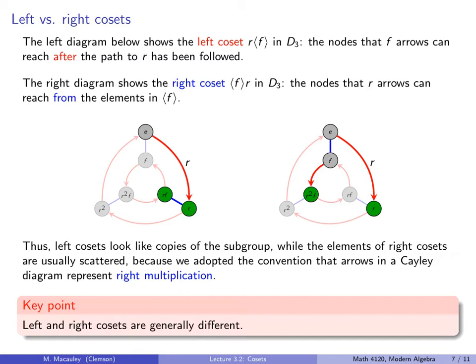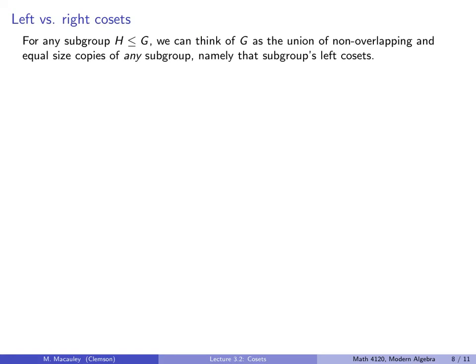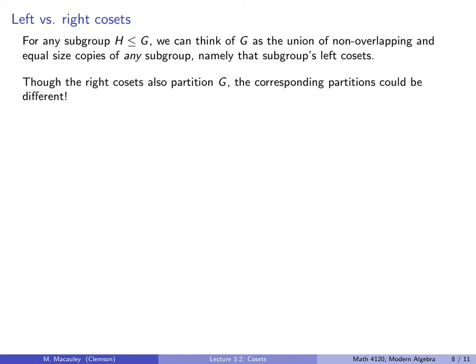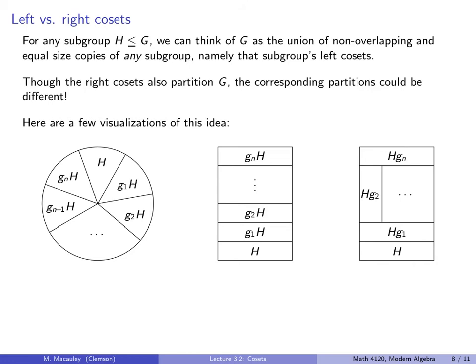A key takeaway is that left and right cosets are generally different — not always, but you should expect that they don't need to be the same. For any subgroup H of G, we can think of G as the union of non-overlapping, equal-sized copies of that subgroup; those are the subgroup's left cosets. The right cosets also partition the group, but the corresponding partitions could be different.